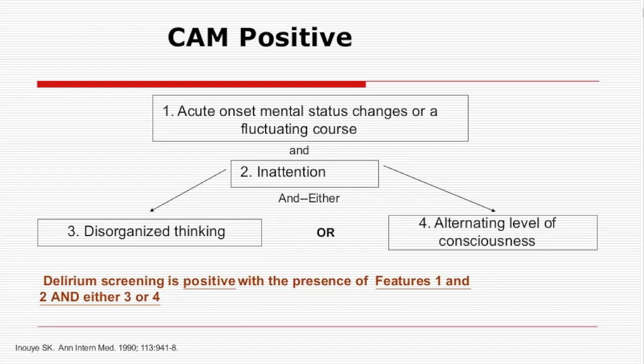Feature three is disorganized thinking — the person tells you they are there to give a lecture, or believes they are being held prisoner against their will. Hypoactive patients may be very fearful and not disclose these thoughts, but the disorganized thinking can come in various ways. Feature four is altered level of consciousness — anything but normally alert is considered altered, whether overly sedated, stuporous, or hypervigilant and fidgety. I hope that is clear.